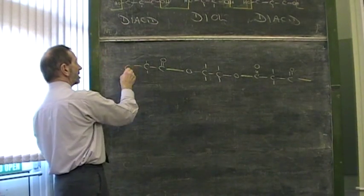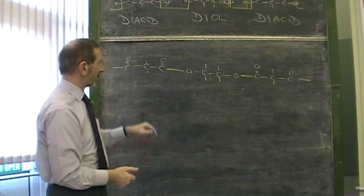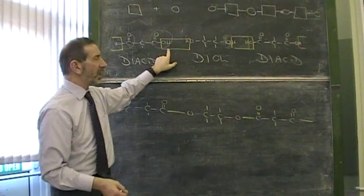Something like this here. This acid, we'll have that. So, there we are. Polyester. It's called a condensation polymer because when these join together, they lose water.